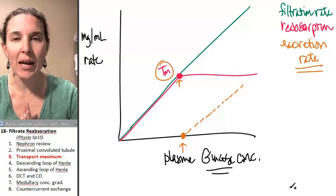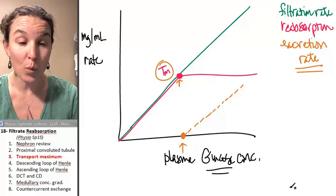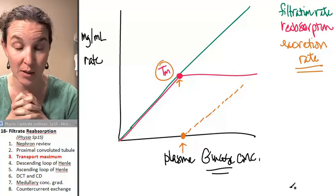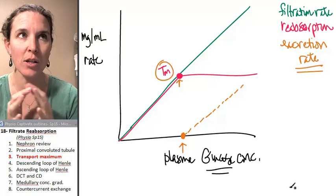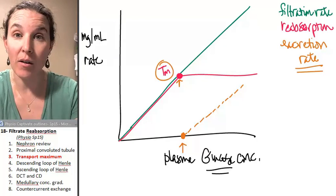All right. We made it through the proximal convoluted tubule. Hopefully, we've reabsorbed all of our stuff. We haven't overwhelmed our transporters, and now our task is to look at what's going to happen in the descending loop of Henle.